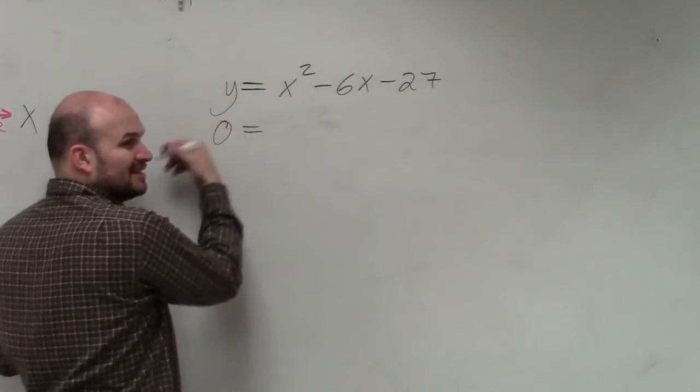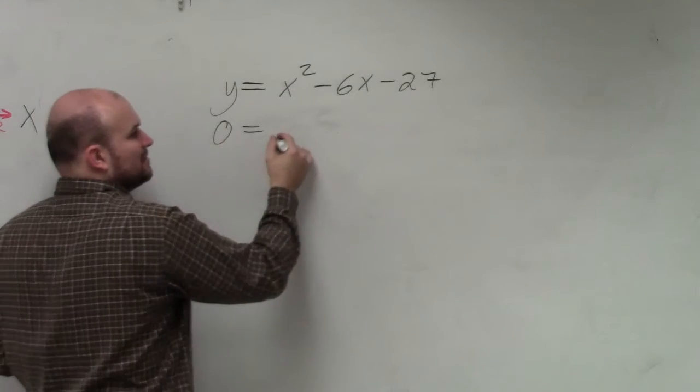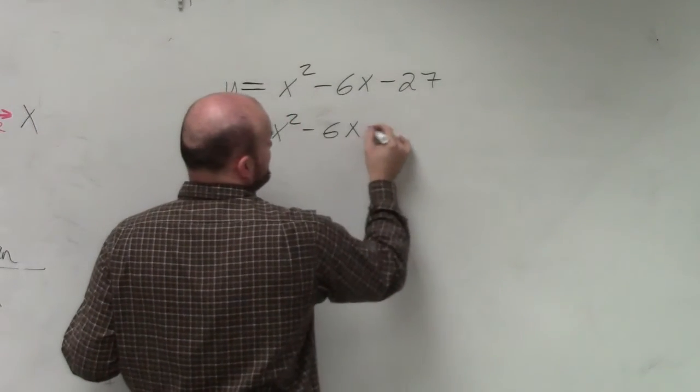In this case, we don't have anything on the left side, but we have y. So we're just going to replace that with 0: x squared minus 6x minus 27.